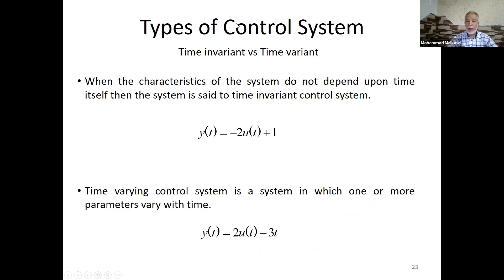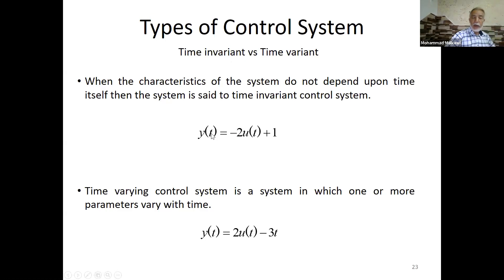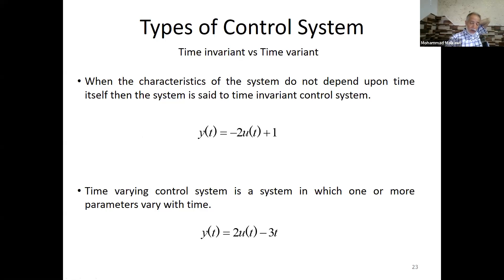Linear systems can be time-invariant or time-variant. Time-invariant means y changes in terms of u but for the same time unit — the result of y does not change in time differently than u. Time-variant means the output y depends on time itself, like y(t) = y - 3t. The system can also be continuous — with a continuous response x(t) over time — or discrete, occurring only at certain instances.